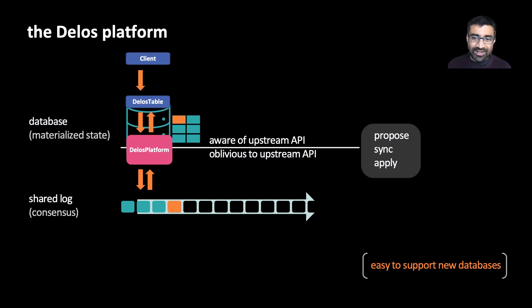This design has the property that it's quite easy to support new databases simply by replacing the top half. The bottom half of the system, that is the platform and the consensus protocol, is oblivious to the upstream API. In addition, the top half can be quite thin. We are able to move a lot of generic logic for things like consistency checking, trimming the log, backup restore, and so on into the platform layer.